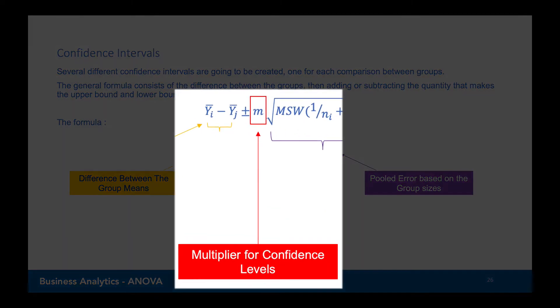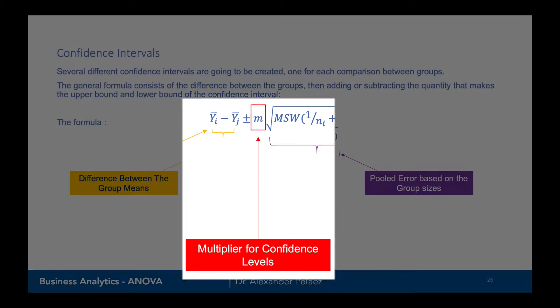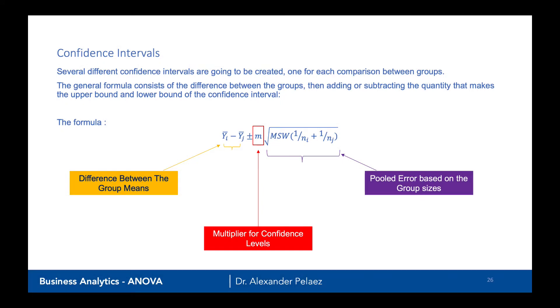The more interesting part is going to be this multiplier for the confidence level, what we're going to call M. This M will change based on how conservative or liberal we want our confidence interval to be. Do we want a more narrow confidence interval? Do we want a wider confidence interval? This is called the correction factor.